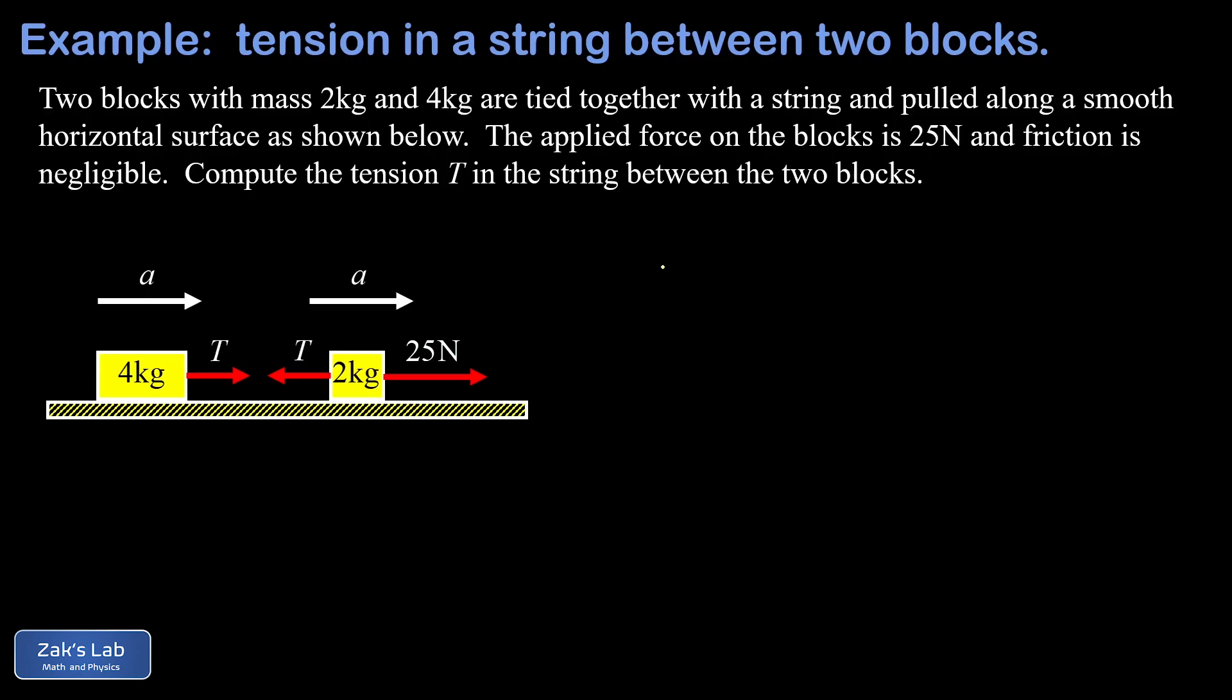And what we do is just apply Newton's second law to each of these individual masses. And this is going to build a system of equations. So I'll start with the 4 kilogram block. And the Newton's second law analysis of the 4 kilogram block, that would be F net equals ma.